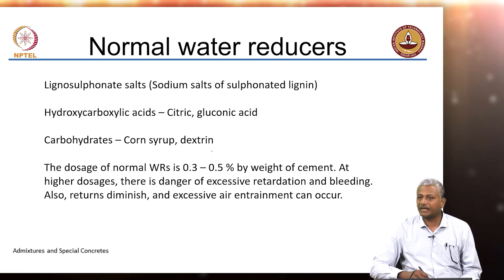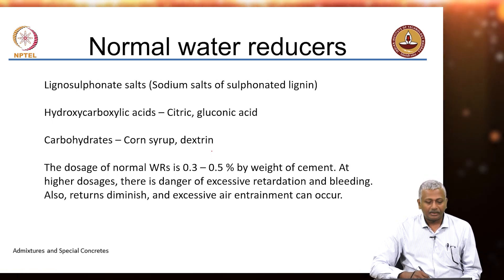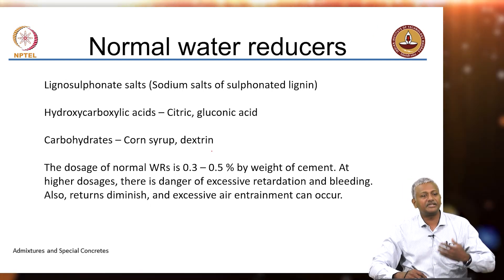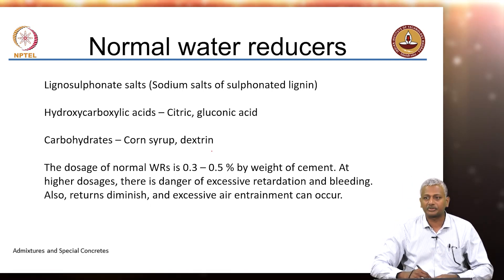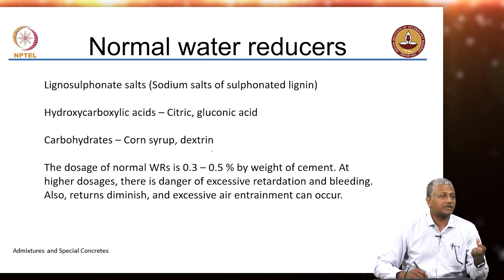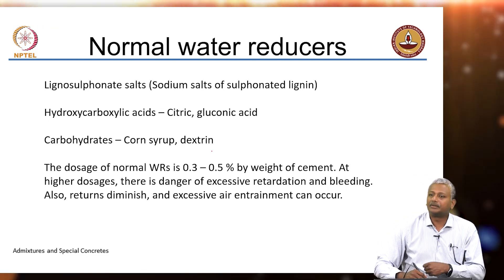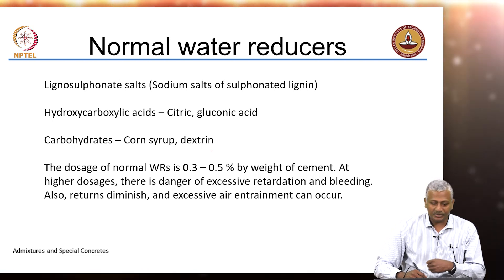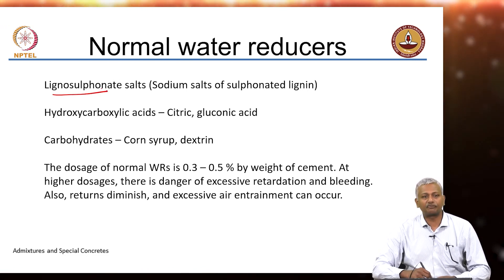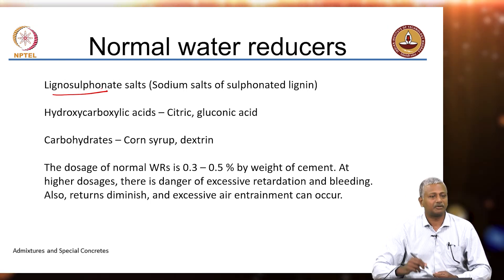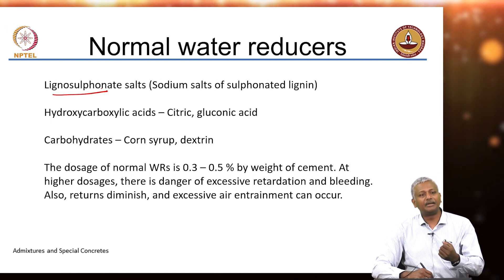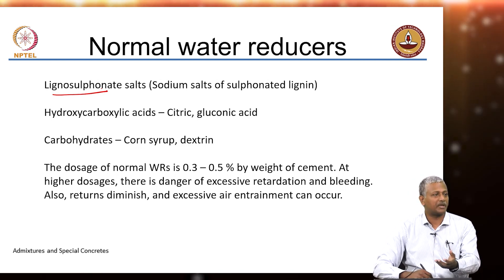Most of the chemicals used in the early generation of chemical admixtures or superplasticizers were based on technologies or chemicals derived from other processing facilities. For instance, lignin-based chemicals, lignosulfonates — where is lignin obtained from? From wood. Lignin is obtained from wood, and we use wood for processing paper.